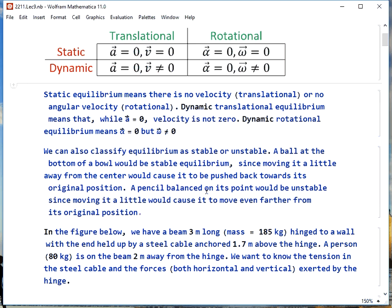We could also look at stable versus unstable equilibrium. If we had a ball at the bottom of a bowl, that's stable equilibrium because moving it a little bit away from its equilibrium position will cause it to roll back to that position. A pencil balanced on its point is unstable, though, since if we move it a little bit, it will keep moving farther from its initial position.